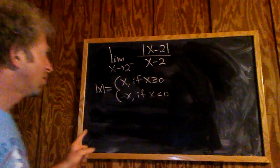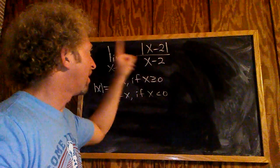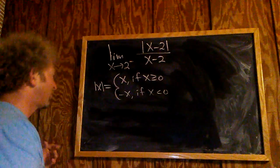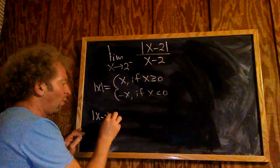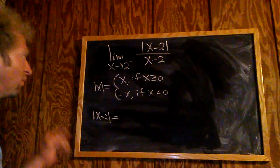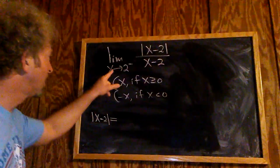In this case, we don't have x, we have the absolute value of x minus 2. So what is that? Let's think about this. What is x minus 2 in this case? Here, x is approaching 2 from the left.